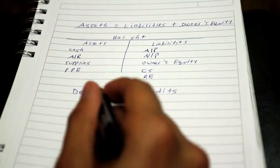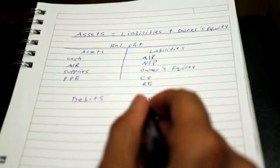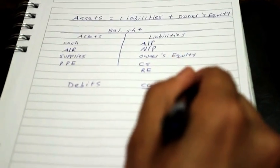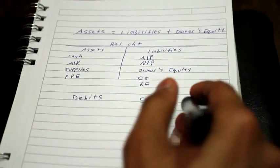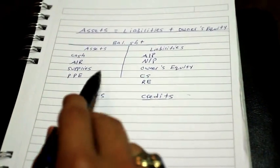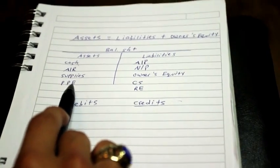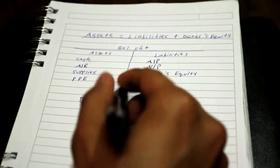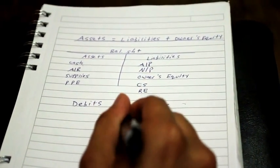Debits are usually on the left side, credits are on the right side. Now the question that arises is when necessarily do you debit a specific account on the balance sheet and when do you credit one? Well, here's a very easy way to learn.